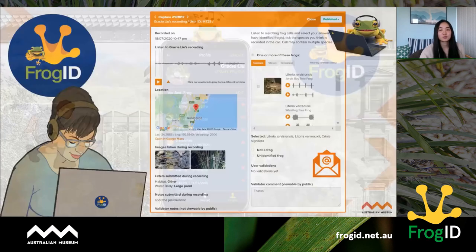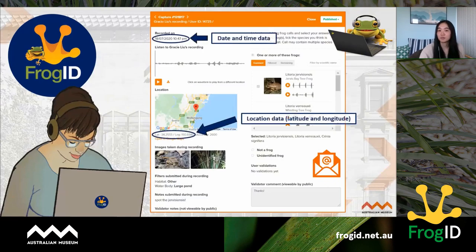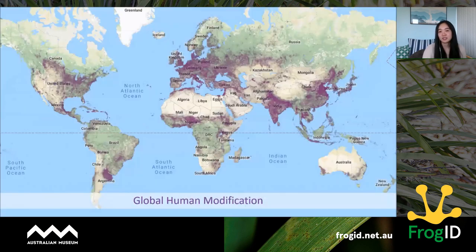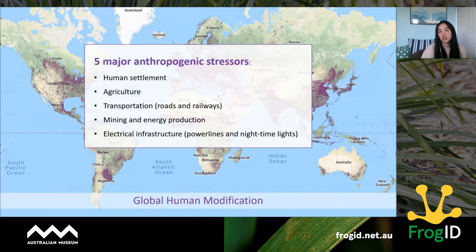On the back end we get access to date, time, and location metadata, which is really important for my research on anthropogenic habitat modification. To quantify that, I use a publicly available global dataset — the Global Human Modification Index. The darker the purple, the more modified the area. This index accounts for five major human stresses: human settlement, agriculture, transport, mining and energy production, and electrical infrastructure.